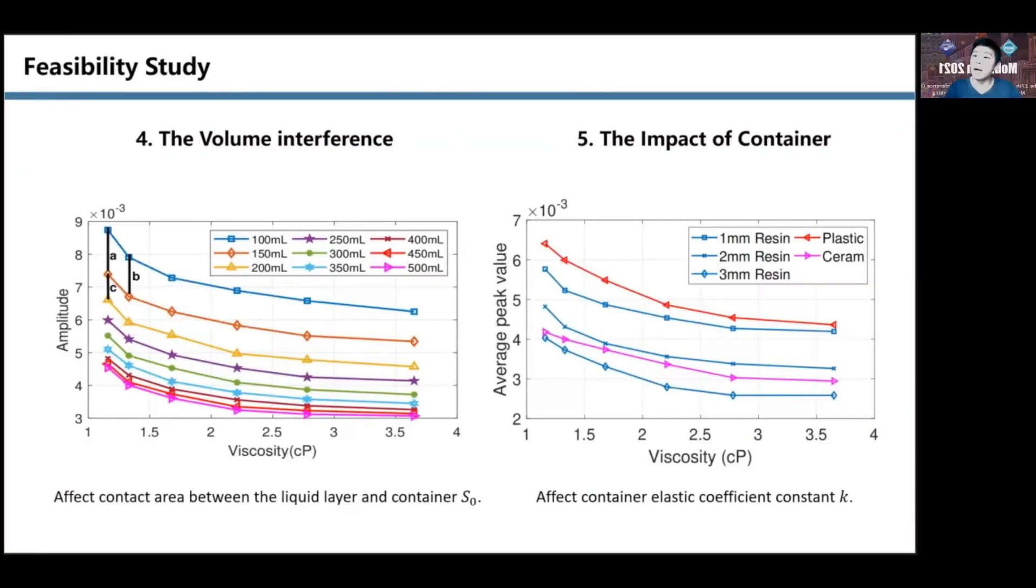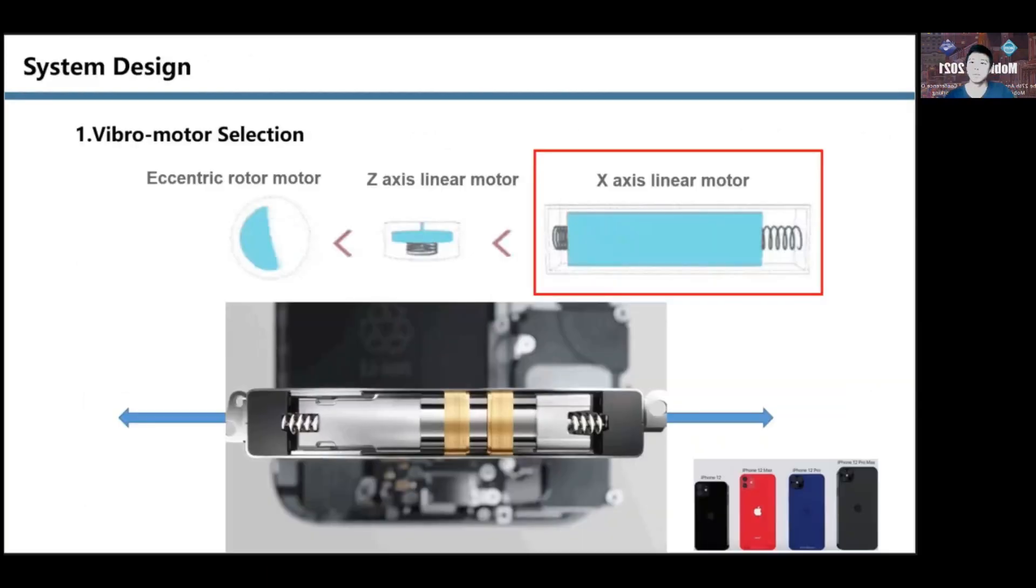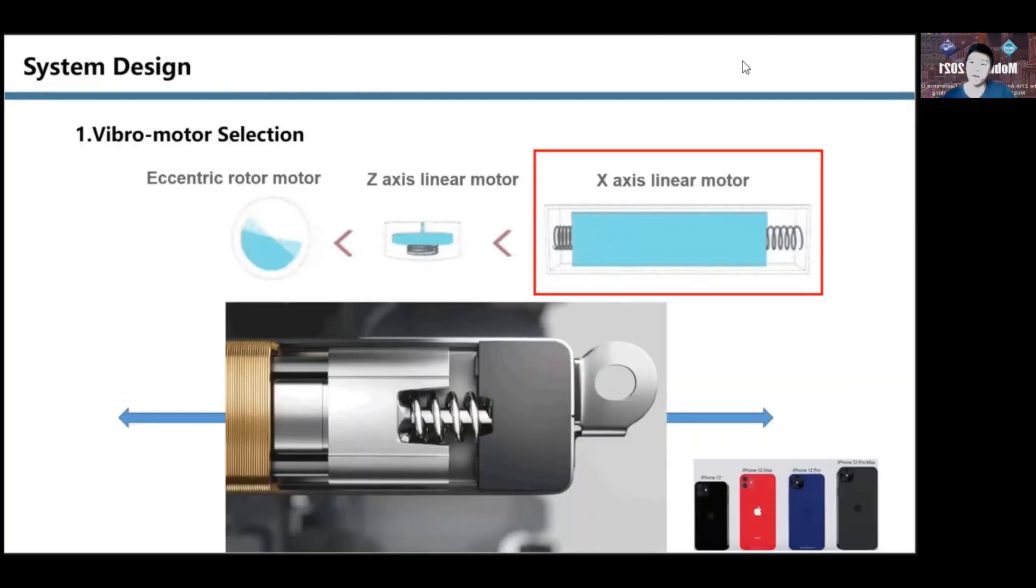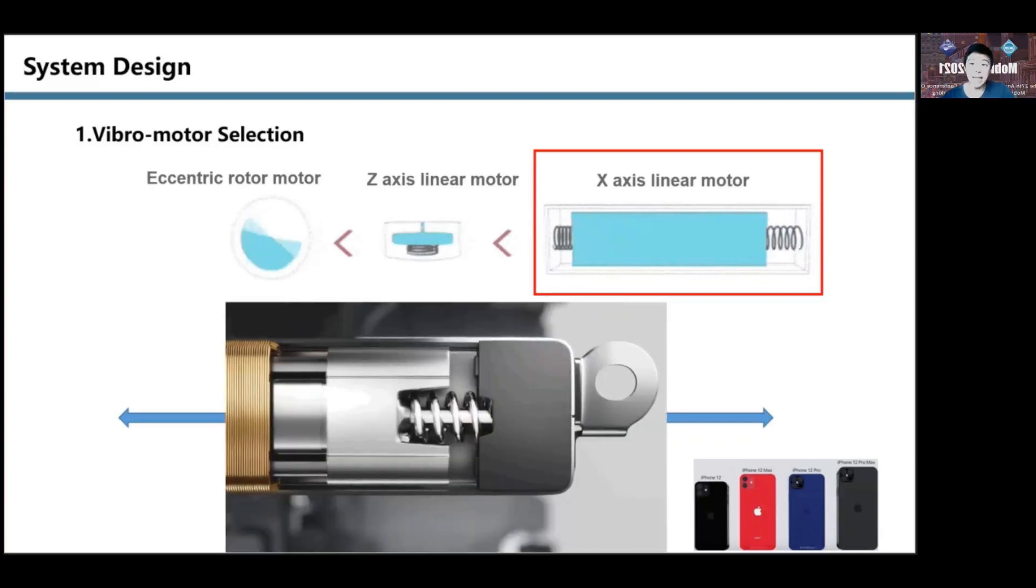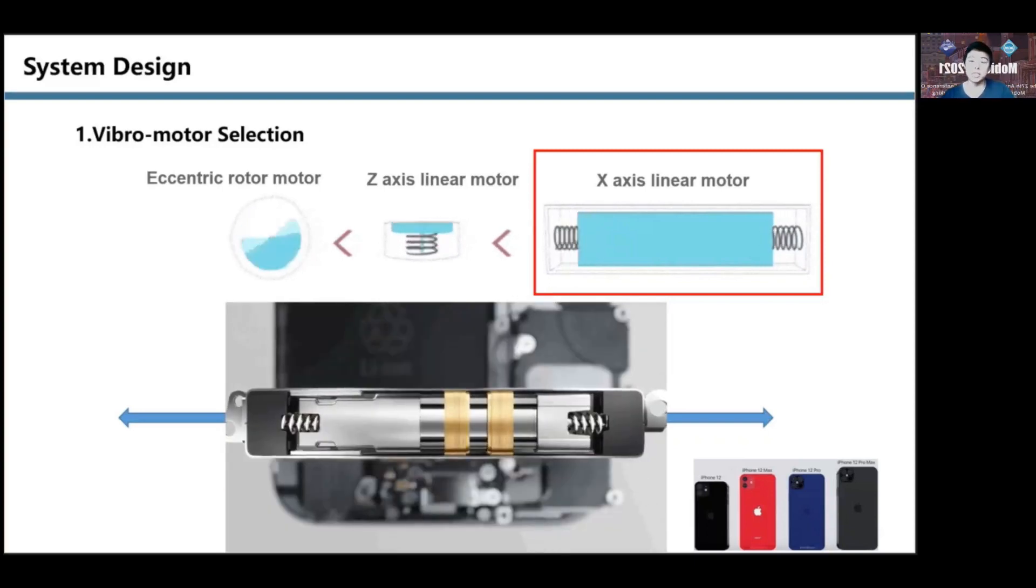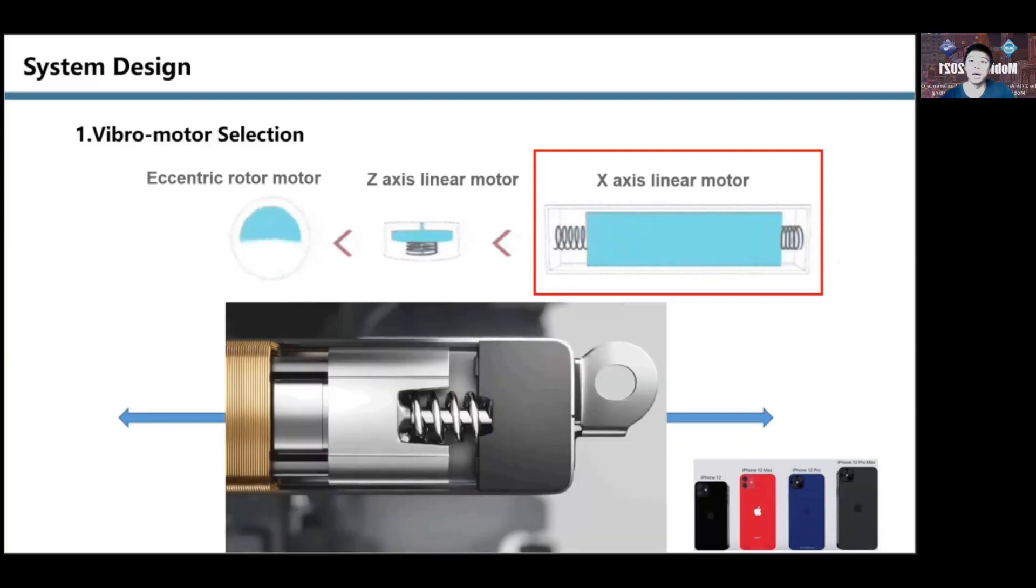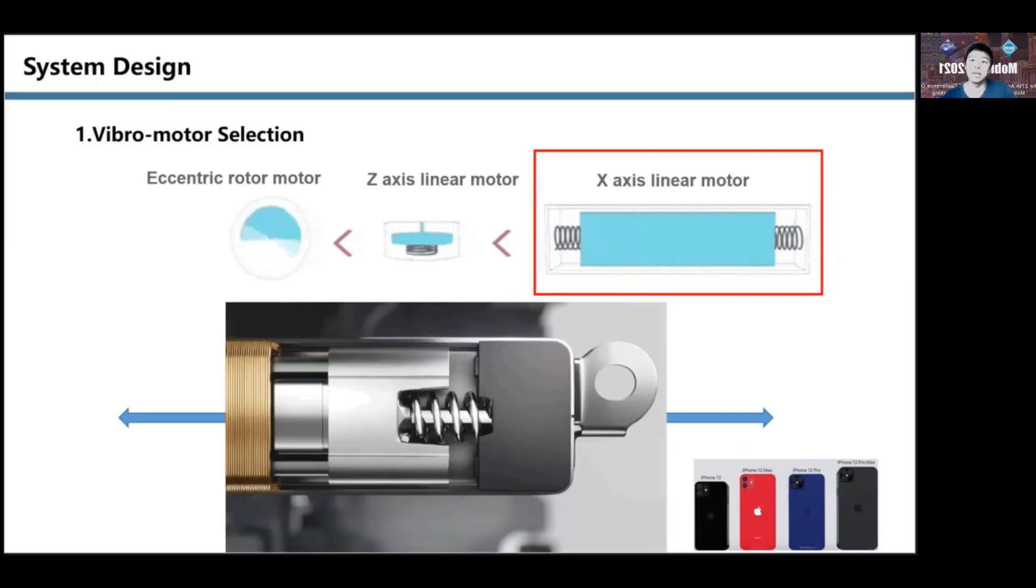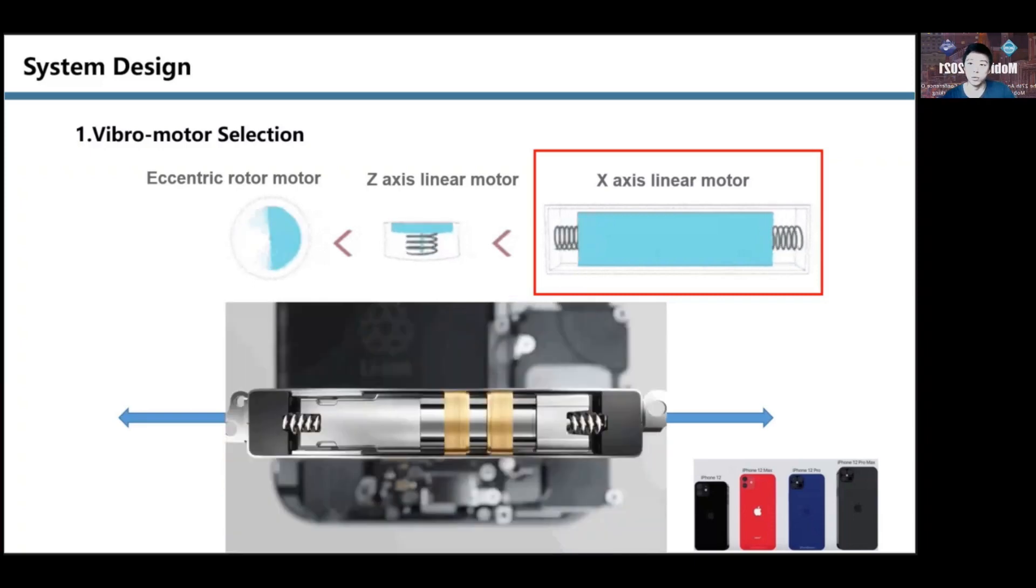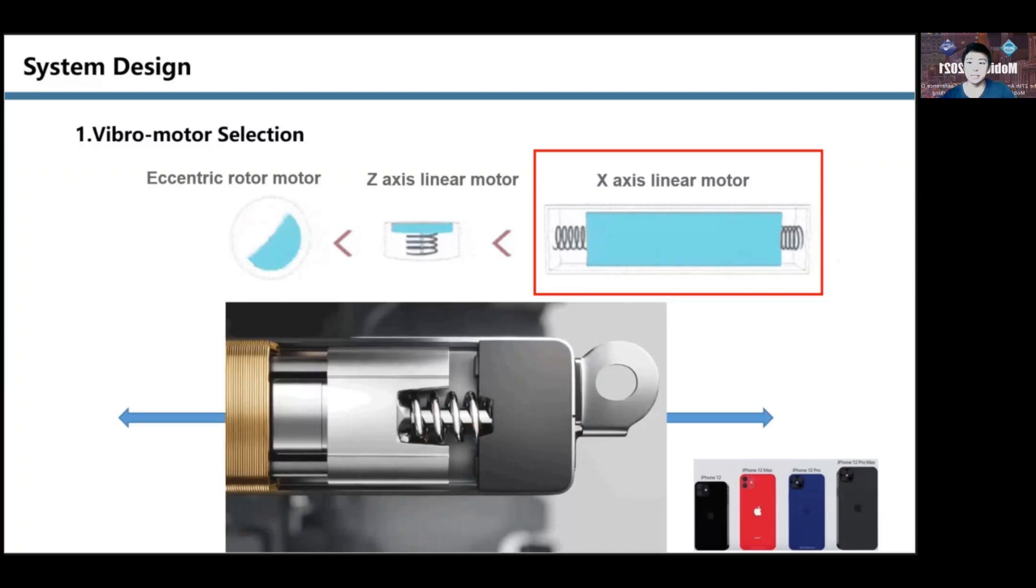This is because weak vibrations do not directly disturb the entire liquid. We found in the volume experiment that volume change will have different attenuation to amplitude. In our experiment, we tried different vibration motors. We tried rotation models, x-axis linear motors, and z-axis linear motors. In contrast, we found that the x-axis linear motor is much better.